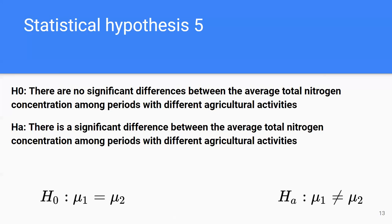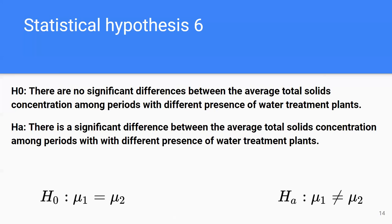The fifth statistical hypothesis is the same as the fourth, but with total nitrogen concentration. The null hypothesis is that the averages are equal, and the alternative is that they are different. The sixth hypothesis is that there is no significant difference between the average total solids concentration among periods with different presence of water treatment plants, functioning similarly to hypotheses four and five with two time frames — before and after the introduction of water treatment plants.